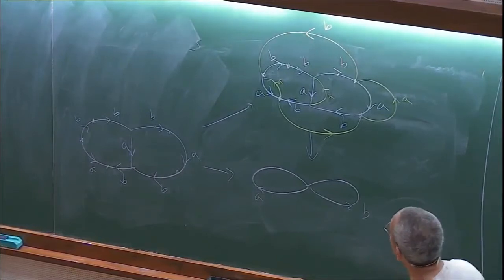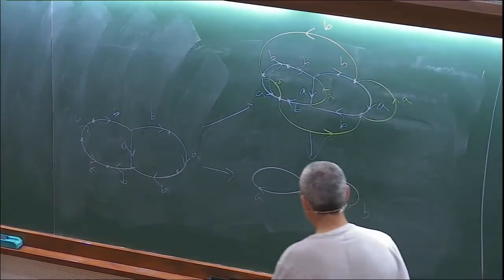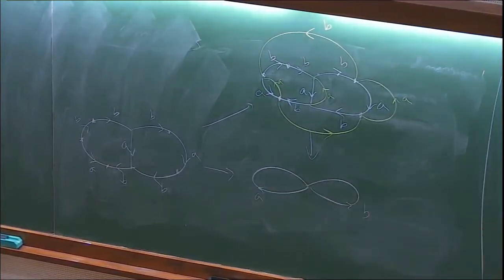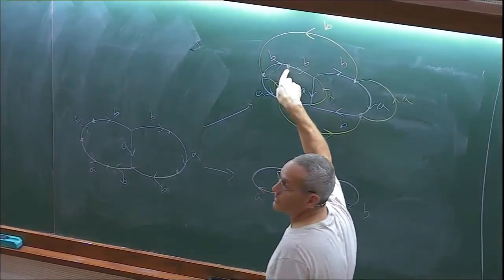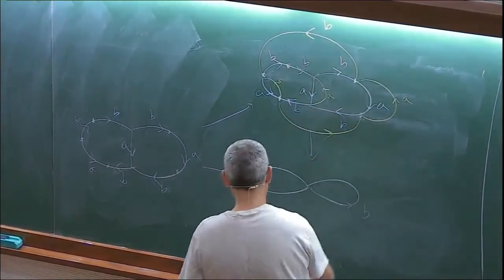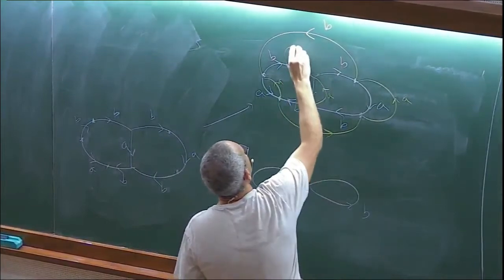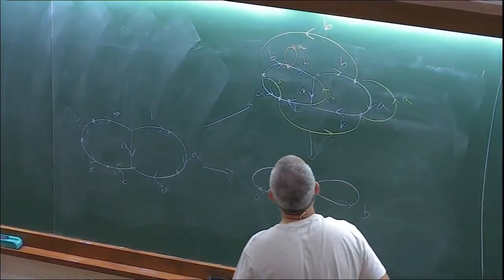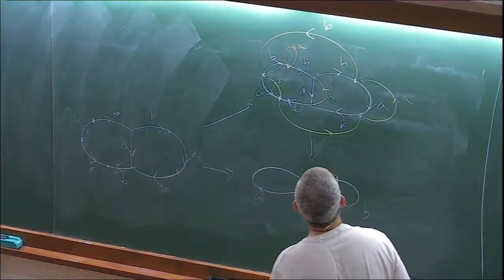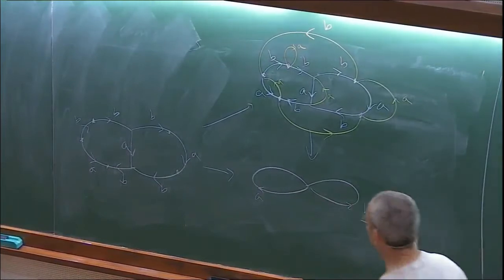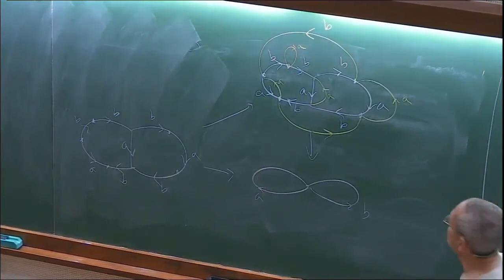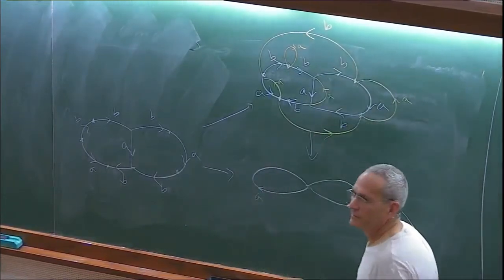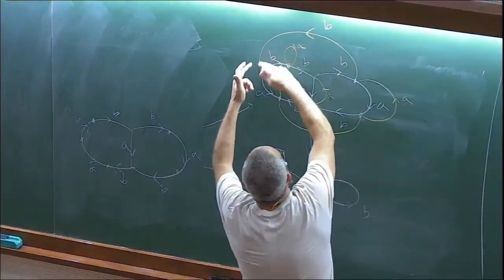Most classes of groups outside of 3-manifold groups, small cancellation groups, and related groups — we just don't know if they're cubulated. Question about co-dimension one subgroups: if you have a group acting on a CAT(0) cube complex without a global fixed point, you can find a hyperplane whose stabilizer is a co-dimension one subgroup, so it's an if and only if. You can try to build tracks to find walls without knowing which subgroup you'll get, or use natural subgroups you think should be co-dimension one.